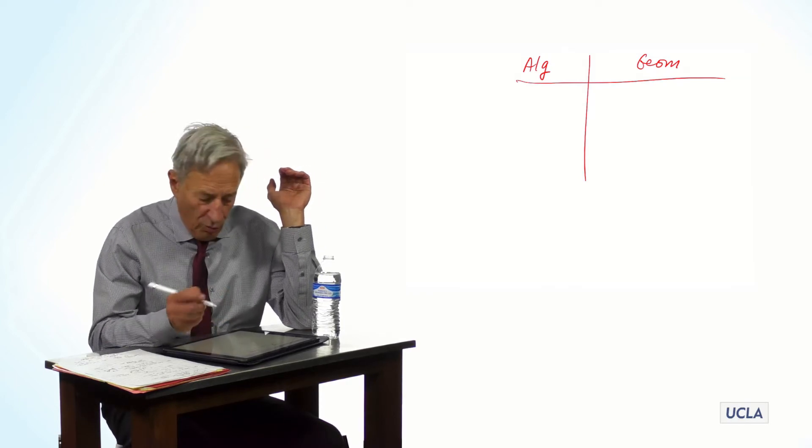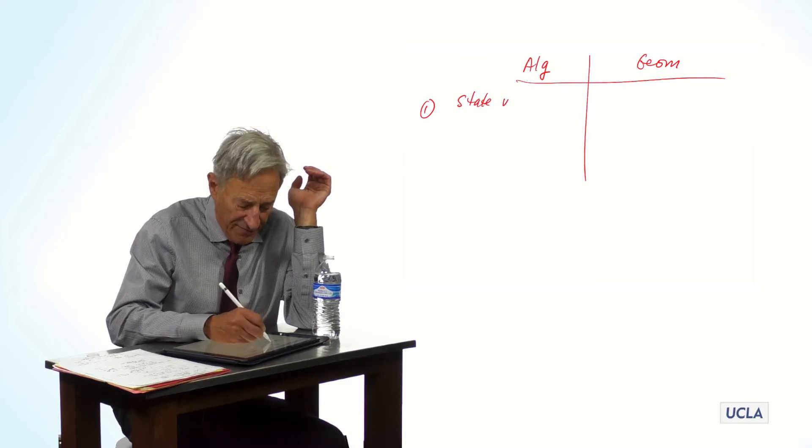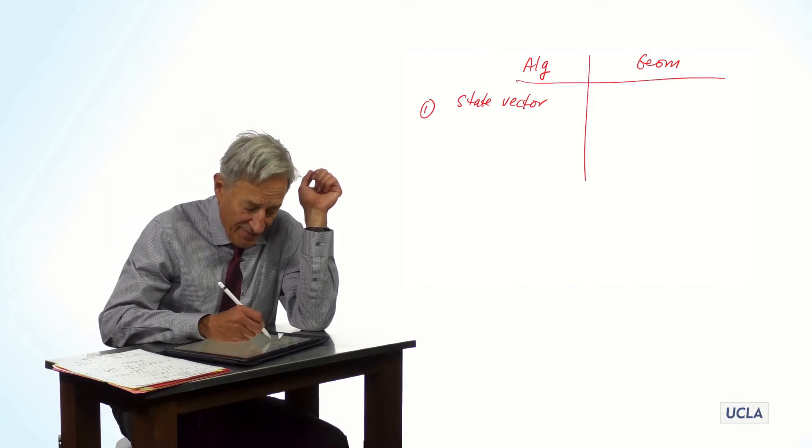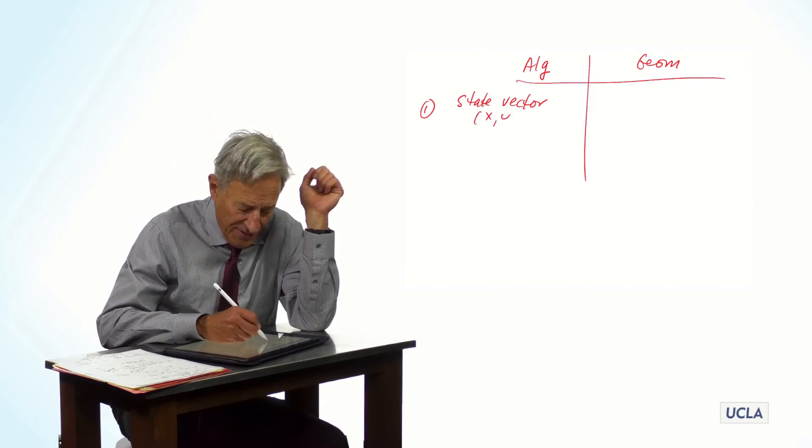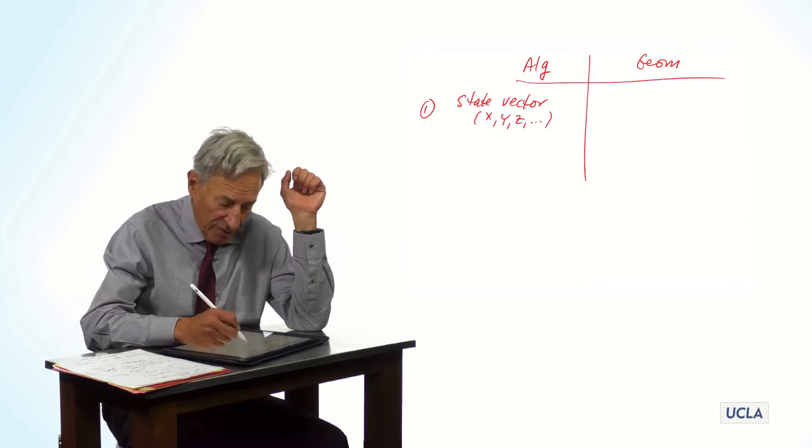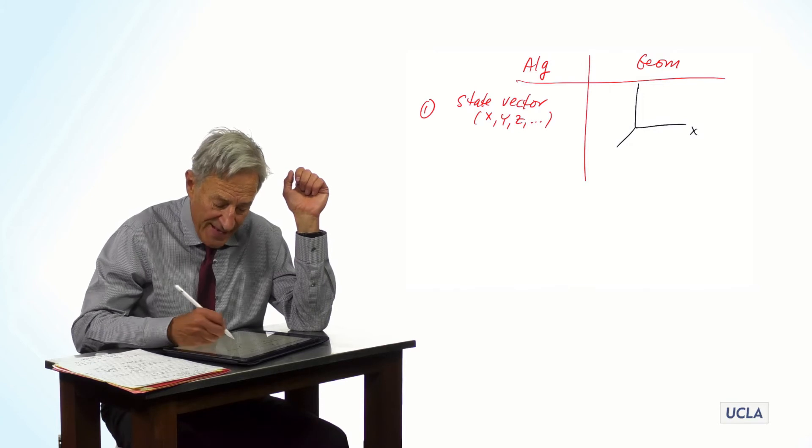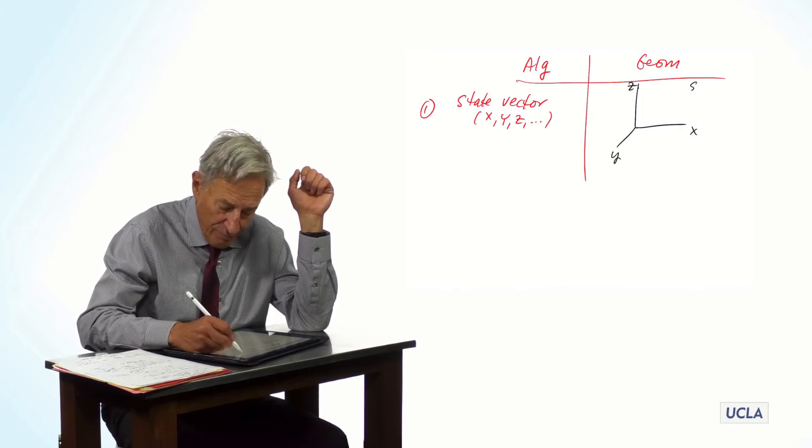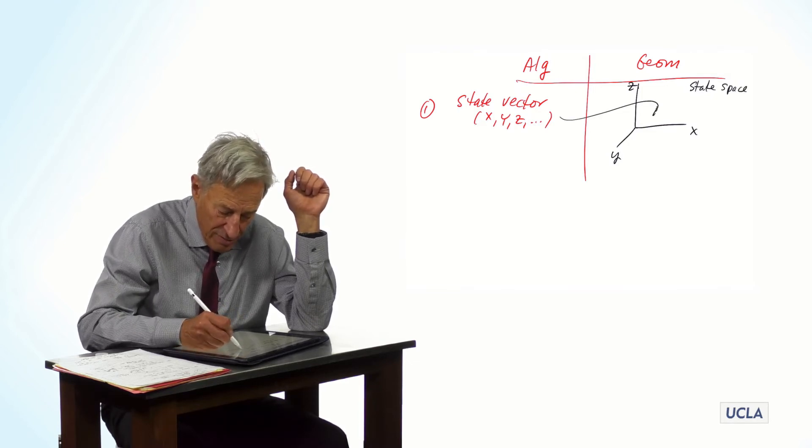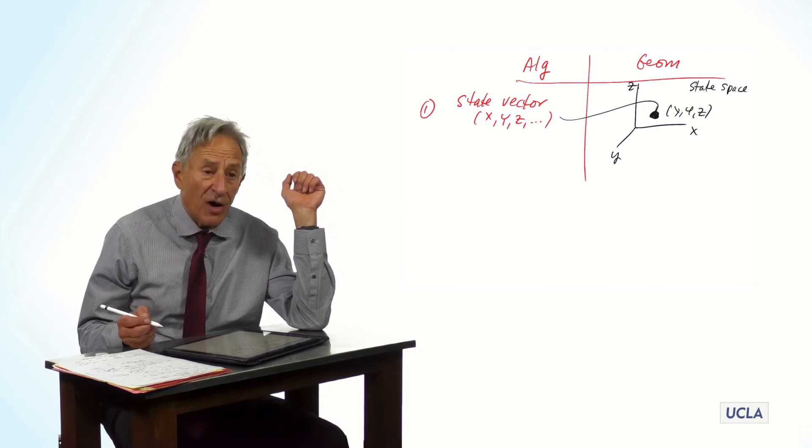we have the first key concept, which is the concept of the state vector. And that is the state vector x, y, z, whatever. And geometrically, that corresponds to a point in state space. And this is the point right there, which is the point x. And this is three-dimensional state space, so this is the point x, y, z.